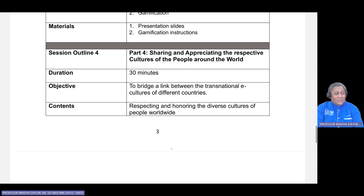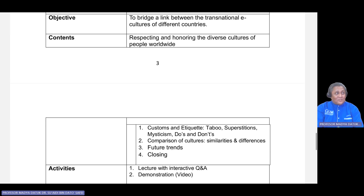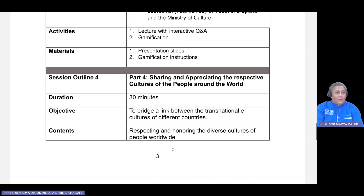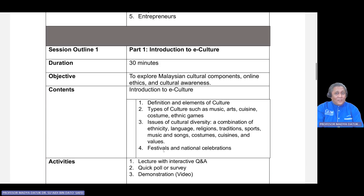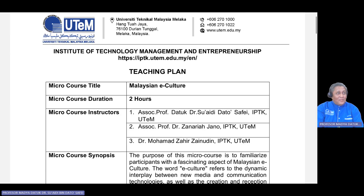Last but not least, part four: sharing the transnational culture — sharing and appreciating respective cultures of people around the world. Content will be respecting and honouring diverse cultures of people worldwide, customs and ethics, a table of superstition myths, the do's and don'ts, comparison of countries, similarities and differences, and then future trends — that will be the closing mark. A clear explanation of what our micro course content would be if we run the micro course in our collaboration. I wish you all the best and looking forward to our next collaboration. Thank you and bye-bye.